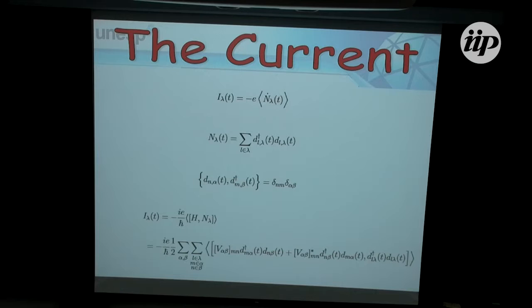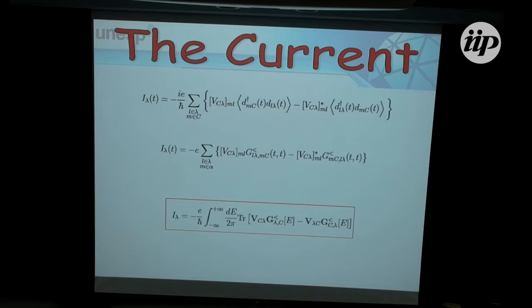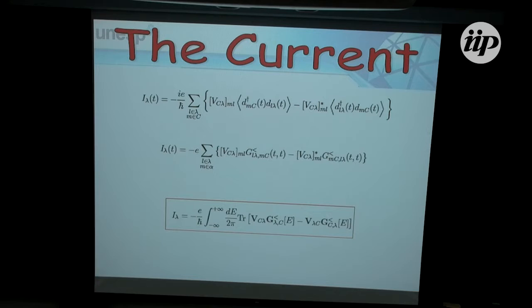Going back to our Green's functions — the retarded and advanced Green's functions — we place these in our current expression, and because we're taking these averages, what shows up is exactly those lesser Green's functions we defined previously. We get the lesser Green's function for the coupling between my electrode and my central region, times this operator here which is exactly the coupling between the two. So this is my definition of the current. It's going to be a trace, and taking a Fourier transform to go to the spectral representation, the current will be an integral over the trace of this operator.